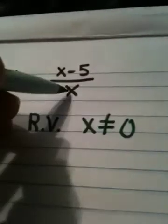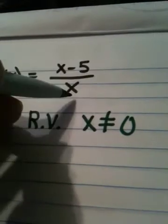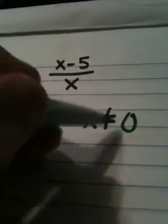Because if it was, if you put zero in a denominator, you would be dividing by zero. So your only RV here is x cannot be zero.